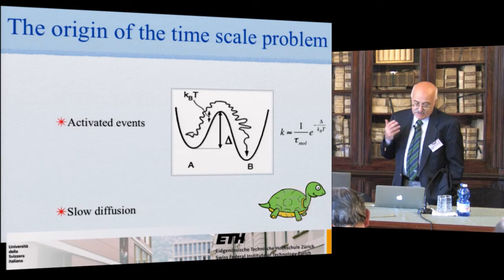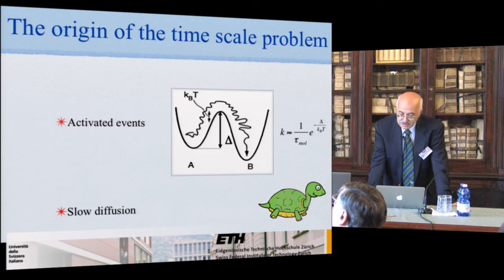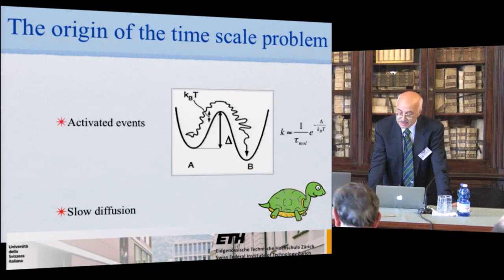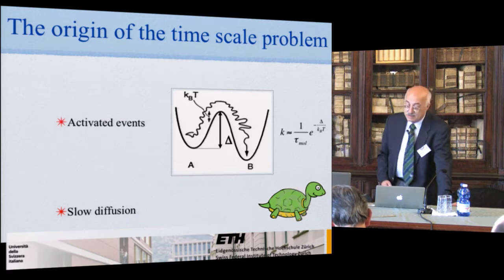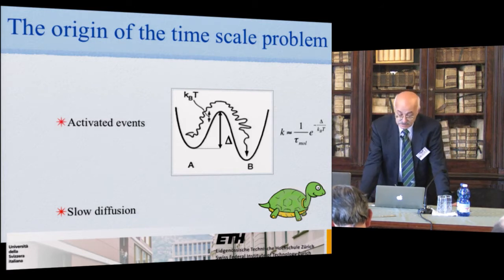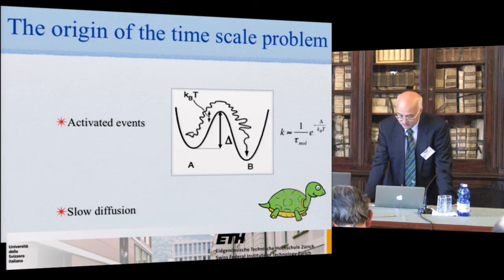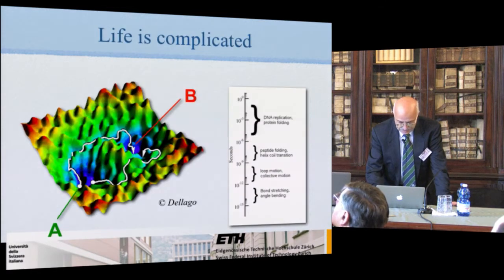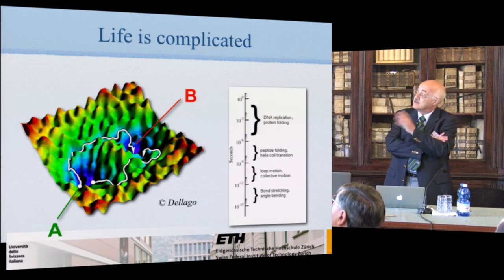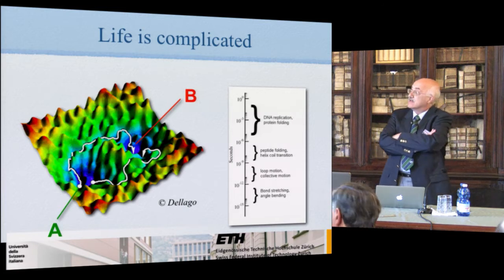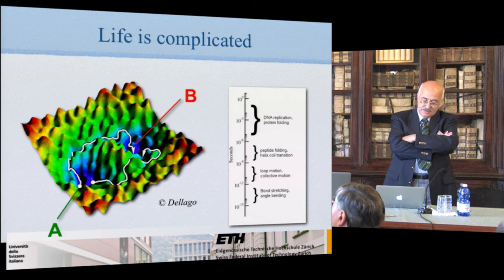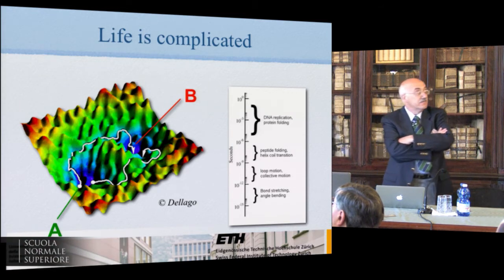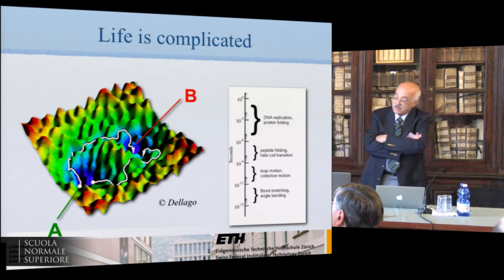The reason for the time scale problem is multifold. One is the existence of a barrier between one conformer and the other. The rate of transition is determined by the height of the transition state. There are also more complicated situations where there is slow diffusion due to entropic barriers. And even when the two states — the reactant and product — are well separated, in a real protein the landscape is very complicated, multi-scale, with a variety of timescales and different pathways between minima.